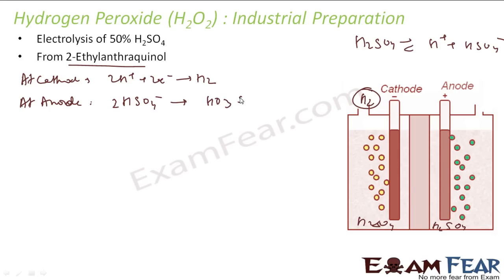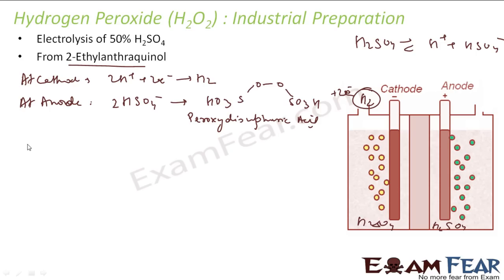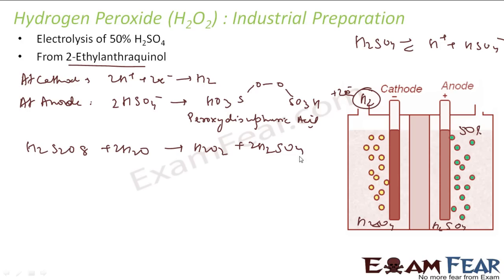The peroxydisulfuric acid formed at the anode has the formula H₂S₂O₈. Two HSO₄⁻ ions combine and release two electrons to form this compound. When this peroxydisulfuric acid is then reacted with water — since the solution is 50% H₂SO₄ and contains water — it gives H₂O₂ and H₂SO₄. So at the cathode you get hydrogen gas, and overall you obtain H₂O₂.